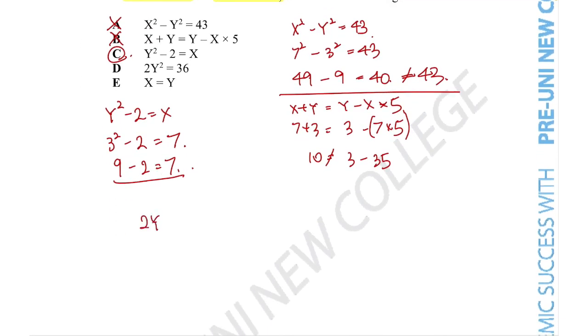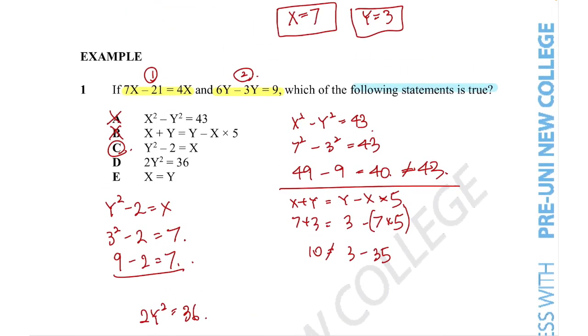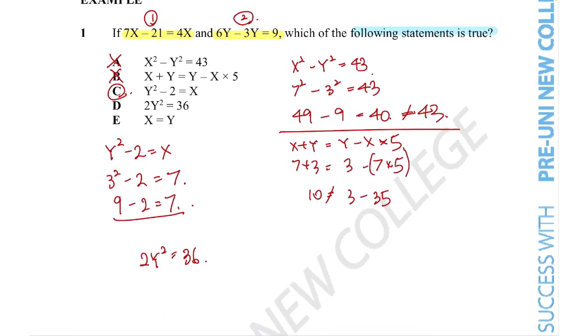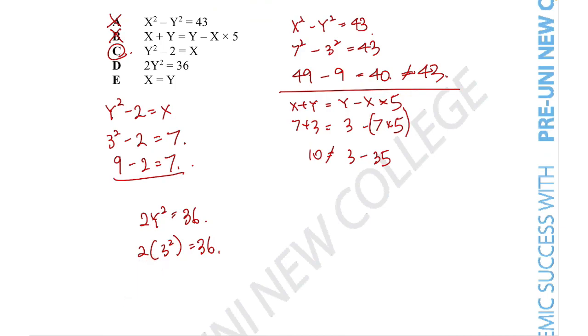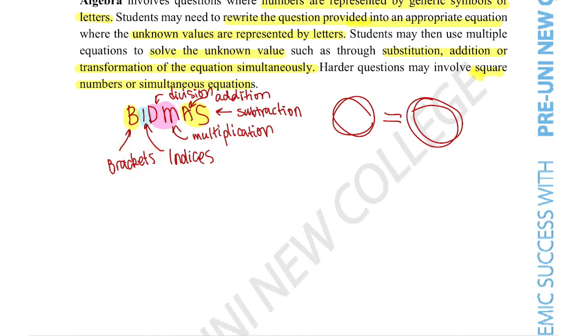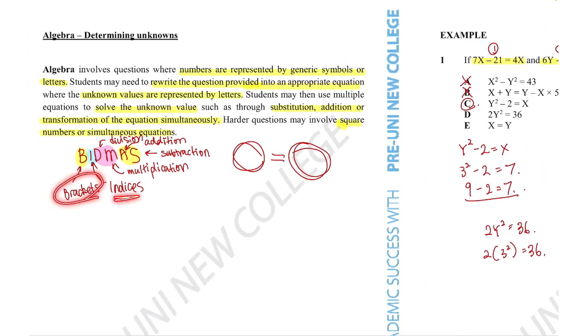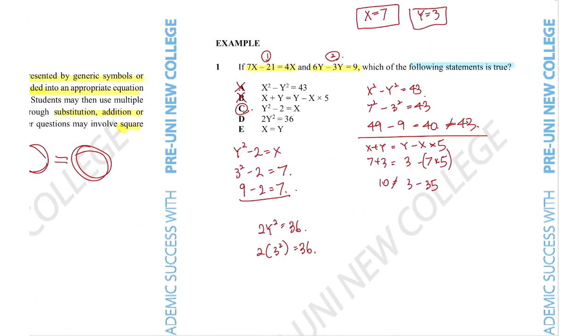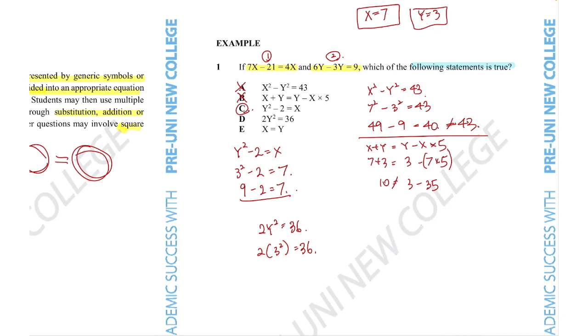2y squared is equal to 36. Substituting in the y is equal to 3 gives us 2 times 3 squared is equal to 36. Again, we've got a bunch of different operations going on here. So we need to make sure we adhere to the rules of BIDMAS, which says that we need to do the brackets first, then the indices, then the multiplication. So for here, we've got the indices right here. So we do that first before the multiplication. So this becomes 2 times 9, which is equal to 18, not 36. So this is incorrect.